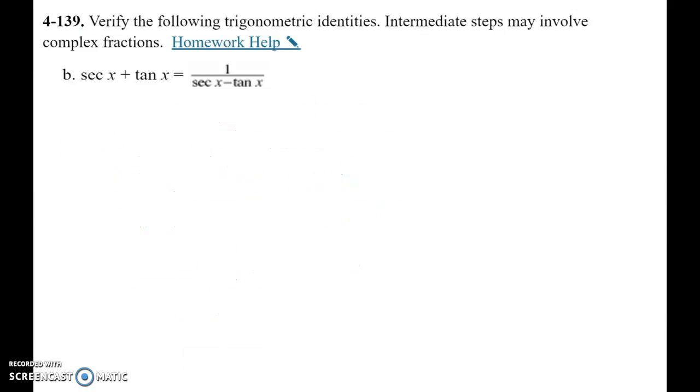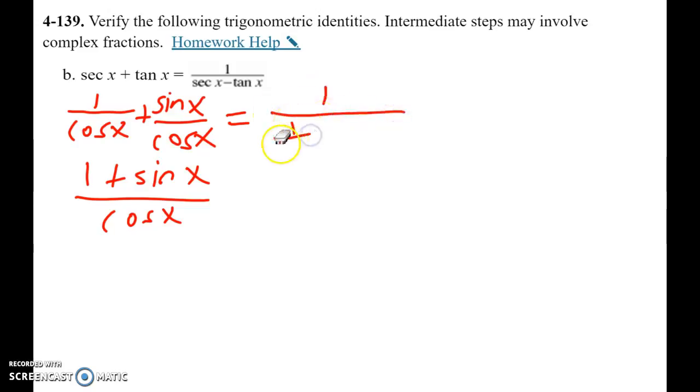A little challenging. First thing to do would be to change everything in terms of sine and cosine. So I'm going to change the secant to one over cosine and the tangent to sine over cosine. And now I've got a nice common denominator, so I've got 1 plus sine x over cosine x. All right, so the other side, one over one minus, one over cosine x minus sine over cosine. Okay, so this is still one over and I've got a common denominator, so I can combine that. So 1 minus sine x over cosine.